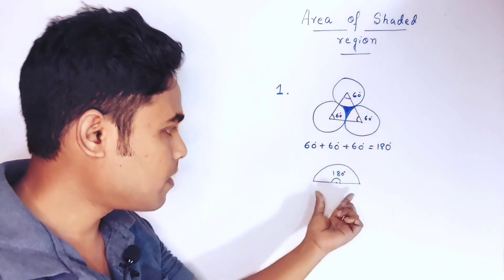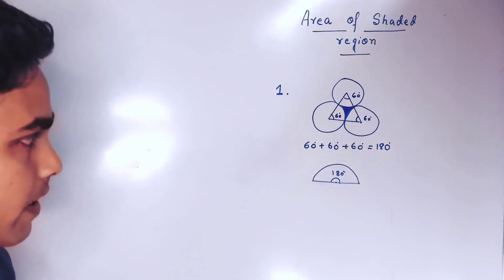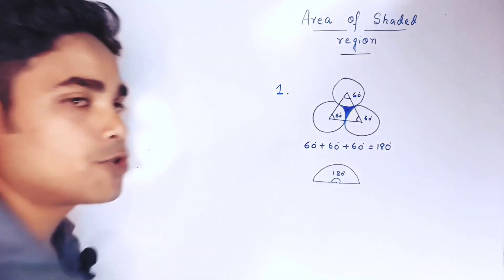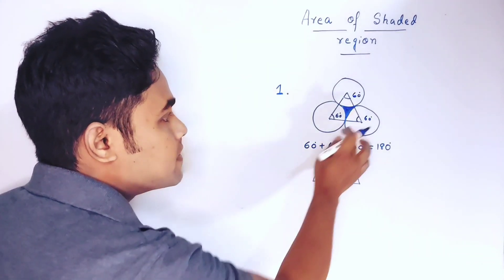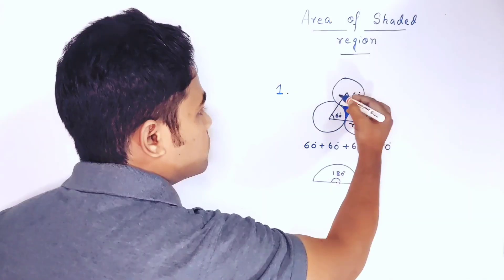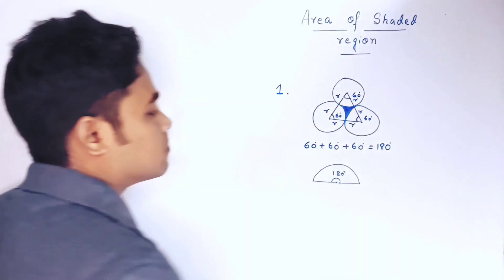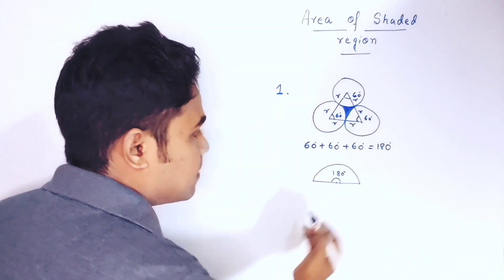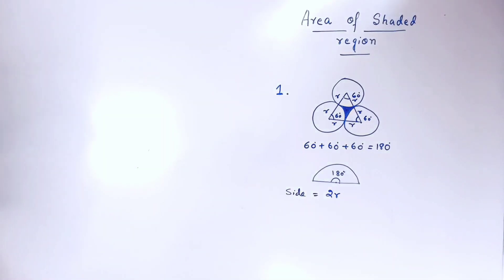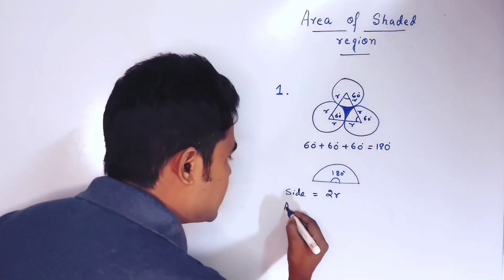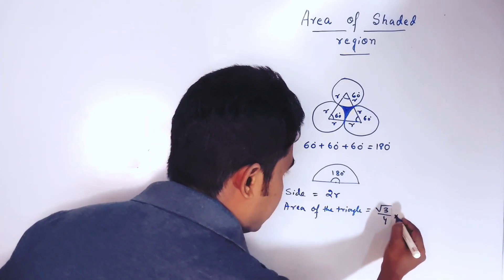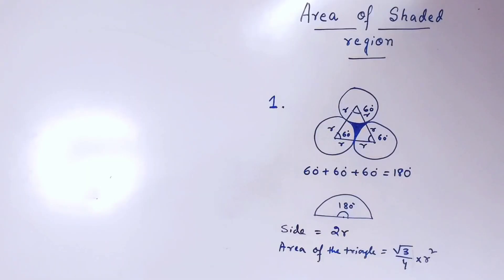Adding 60 + 60 + 60 = 180 degrees, so the three sectors combined form one semicircle. If we subtract this semicircle from the area of the triangle, we will find the area of the shaded portion. Let the radius of each circle be r, assuming all circles are equal in diameter. The length of each side of the triangle is r + r = 2r. Since the triangle is equilateral, the area equals (√3/4) × side² = (√3/4) × (2r)².